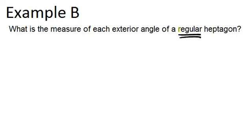So two things of importance here. We have regular, which means that all the sides of the polygon are the same length. And therefore, all the interior and all the exterior angles are each the same measure as well. And also, a heptagon, which you have to remember, is a polygon with seven sides.